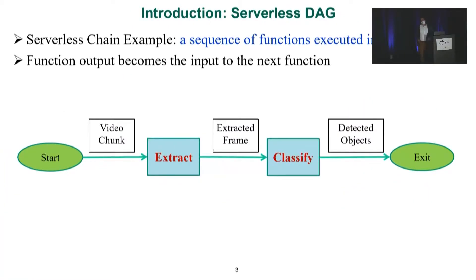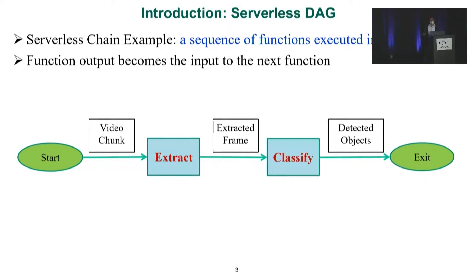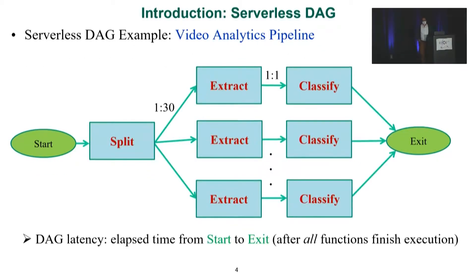A nice feature of serverless computing is that I can compose two or more functions together in a chain to achieve more interesting tasks. For example, here I'm showing a chain of two functions: the extract function takes a video chunk and extracts a representative frame, then passes it to the classify function for object detection. More interestingly, I can leverage the high scalability of serverless computing and compose functions in the form of a DAG — adding a split function that splits a longer video into 30 chunks, then doing extract and classify in parallel for each chunk.